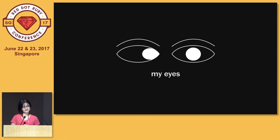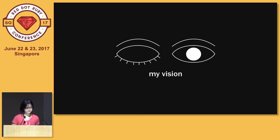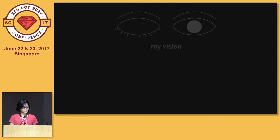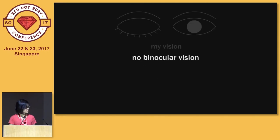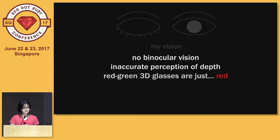As a result of it not being treated when I was young, most of the time my vision is kind of effectively this. In order to prevent double vision, the brain shuts down the visual input from my misaligned eye, and generally this can lead to lazy eye and loss of vision. This means I have no binocular vision, objects tend to appear in a different spot than where they actually are, and red-green 3D glasses are all just red to me.